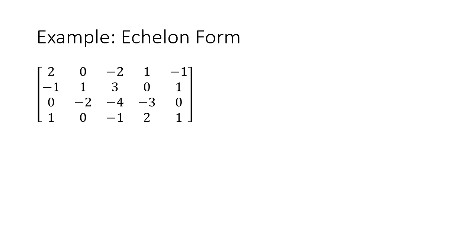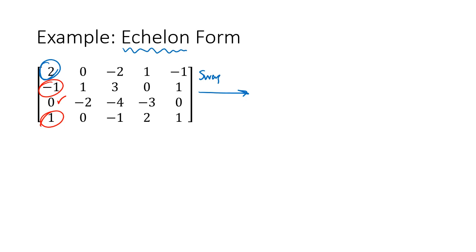When we're thinking about echelon form, all we need in the first column is a non-zero entry in that first row. Right now we have a 2, which is fine. But in order to use the 2 with replacement operations to create zeros below it, we'd need to introduce fractions. So we have an option: we can do a swap to get a nicer number into that first position, or just live with the 2 and fractions. I'm going to do a swap — I'll swap row 1 and row 4 — to make the pivot a 1.